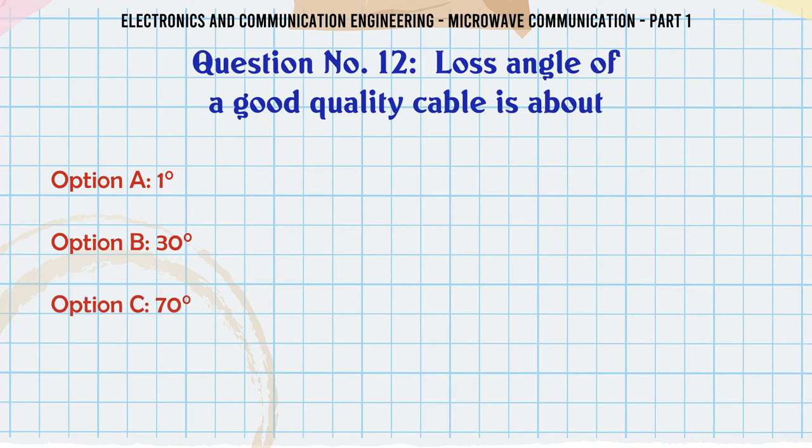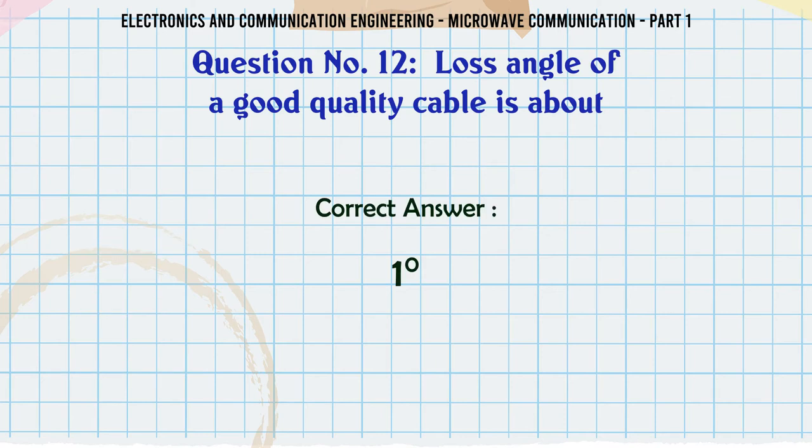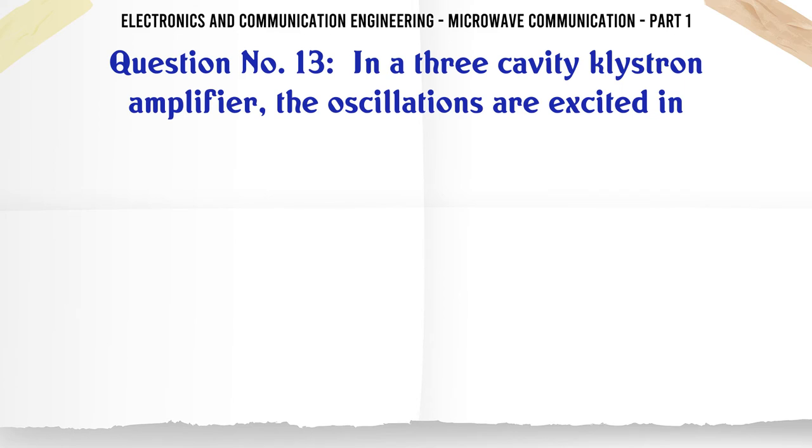Loss angle of a good quality cable is about: A. 1, B. 30, C. 70, D. 90. The correct answer is 1.